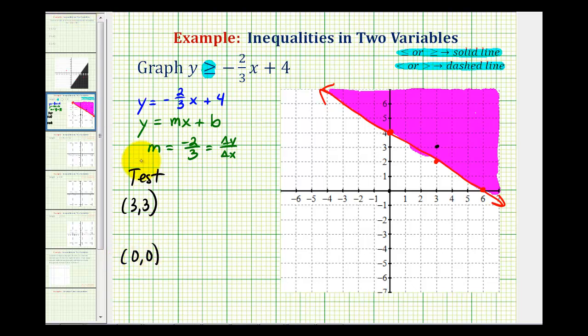Okay, so if we substitute 3 for x and 3 for y, we would have 3 is greater than or equal to negative 2/3 times 3, which I'll write as 3 over 1, plus 4. Well this simplifies. So we have 3 is greater than or equal to, this would be negative 2 plus 4, that's positive 2, and that's true.